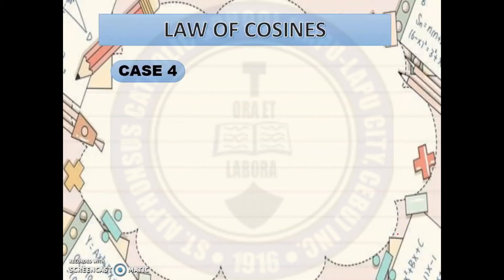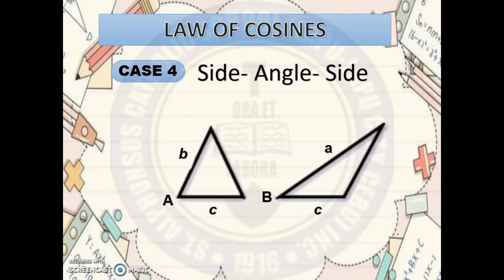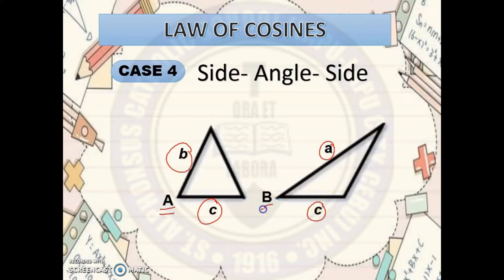Let's proceed to Case 4. For Case 4, you need to use the Law of Cosines. If the given is side-angle-side, meaning two sides and one included angle — the angle between these two sides — then this kind of given is classified as Case 4, and you need to use the Law of Cosines in solving this problem.